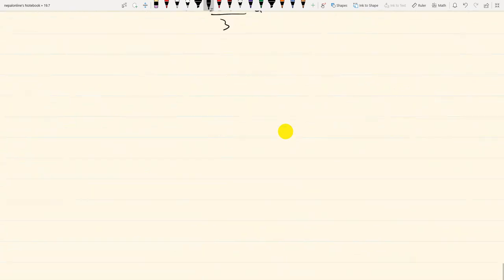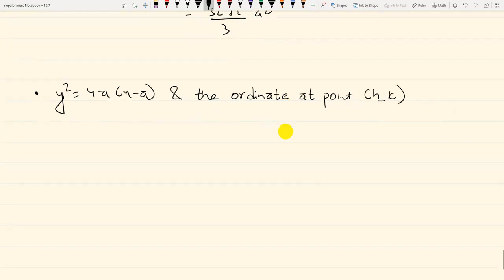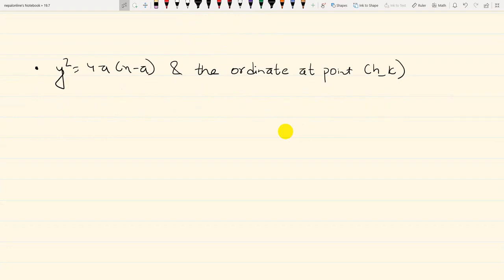Next question: y² is equal to 4a(x-a) and the ordinate at point (h,0). This equation is symmetrical to x-axis. Let y equals 0, then x minus a equals 0, so x equals a.